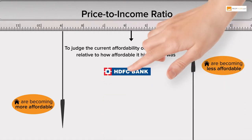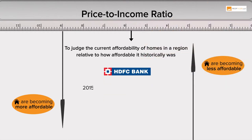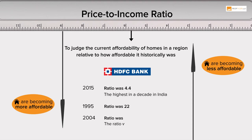According to HDFC, in 2015 the ratio was 4.4, the highest in a decade in India. In 1995, the ratio was 22, and in 2004 the ratio was at its lowest at 4.3.